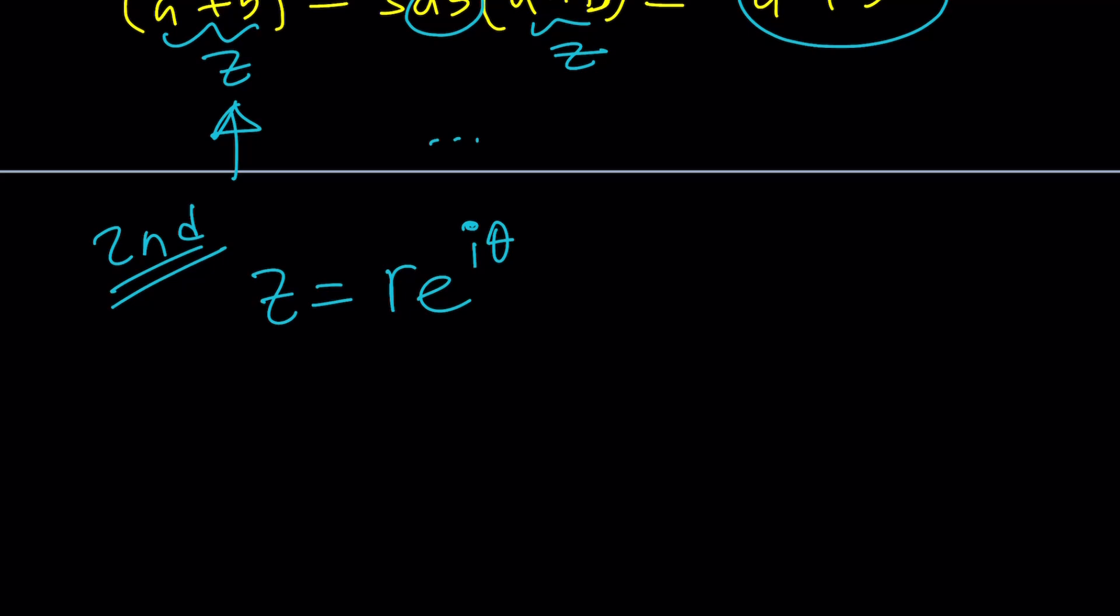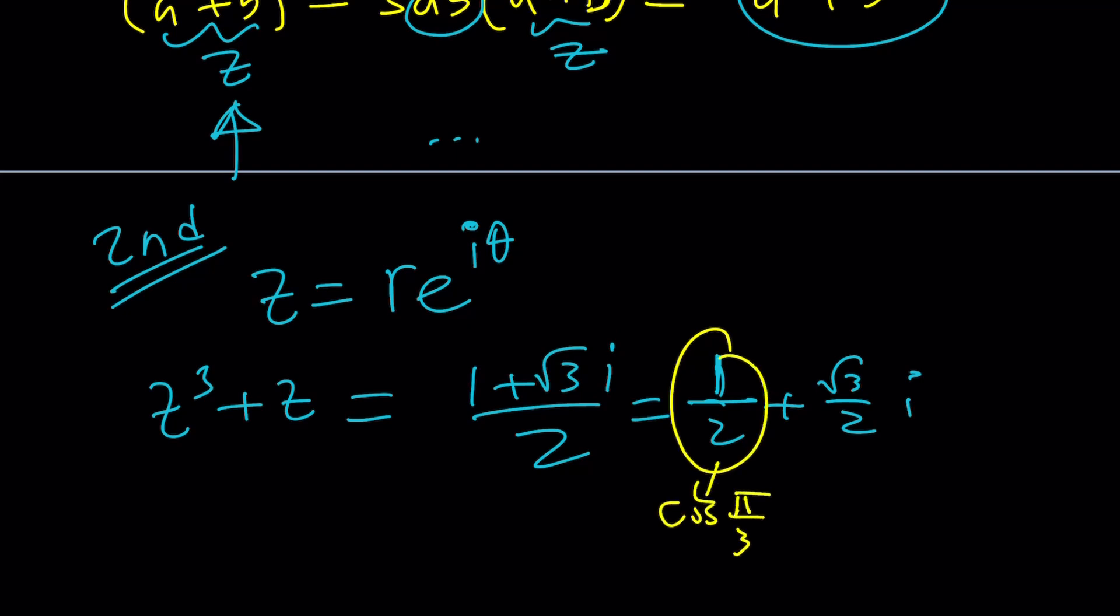And notice that we have z³ + z = (1 + √3i)/2. Can we write it as 1/2 + (√3/2)i? And what does that remind you? This is something that we should know. This is the cosine of 60 or cosine π/3, and this is sine of 60, which is sine π/3. Remember, cosine 60 is the same as sine 30, which is 1/2.